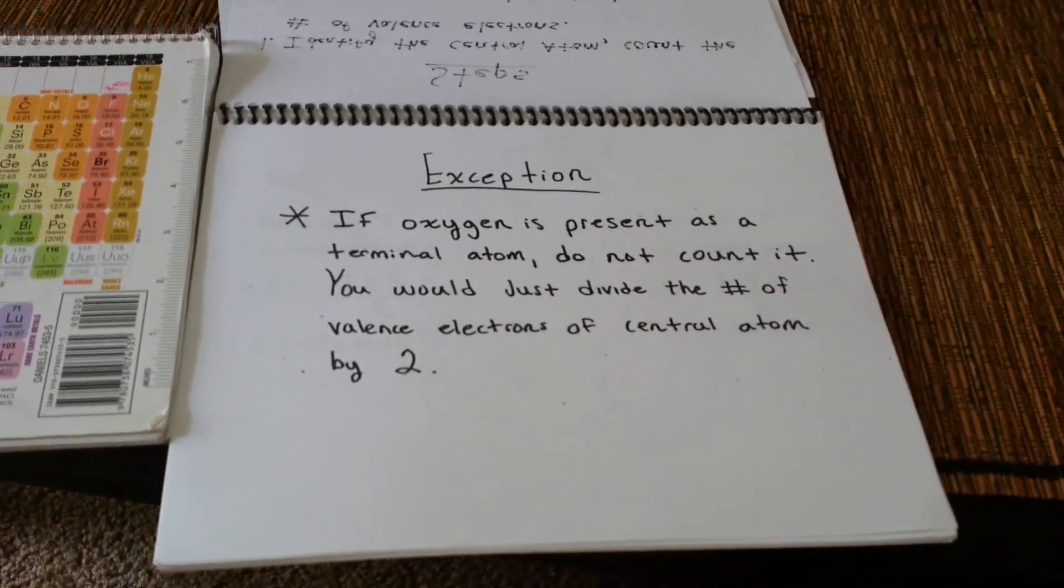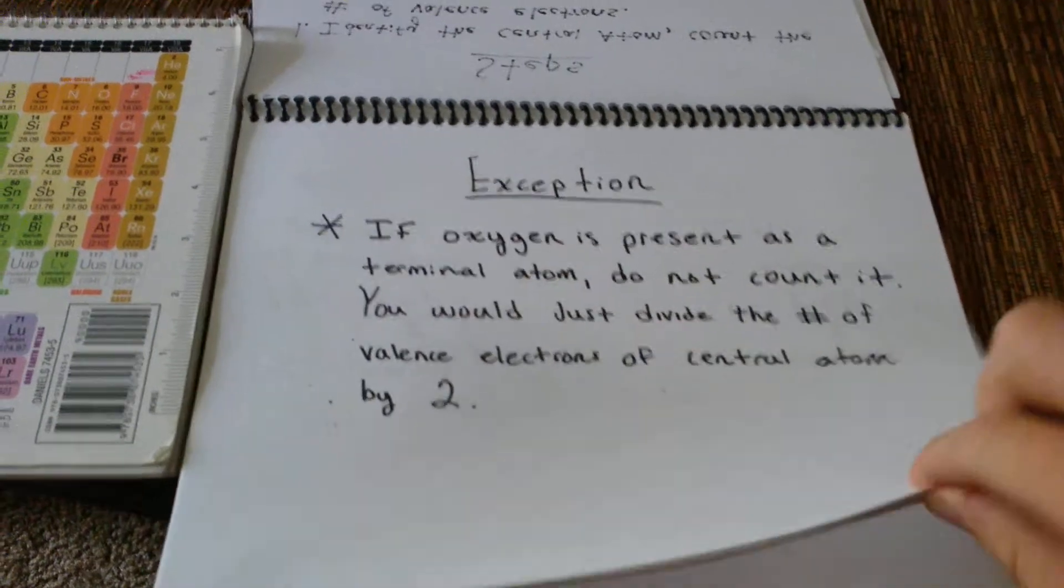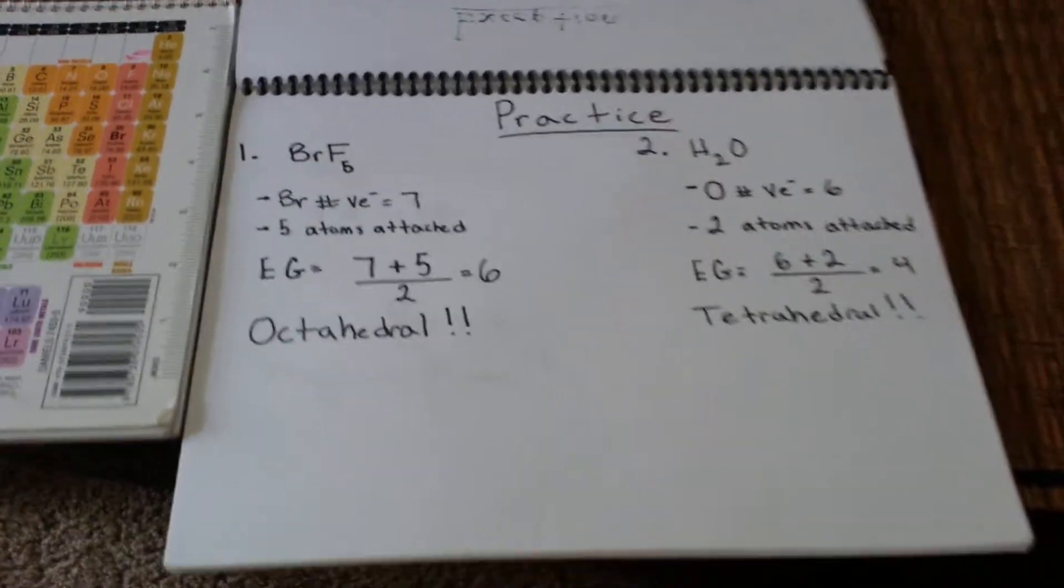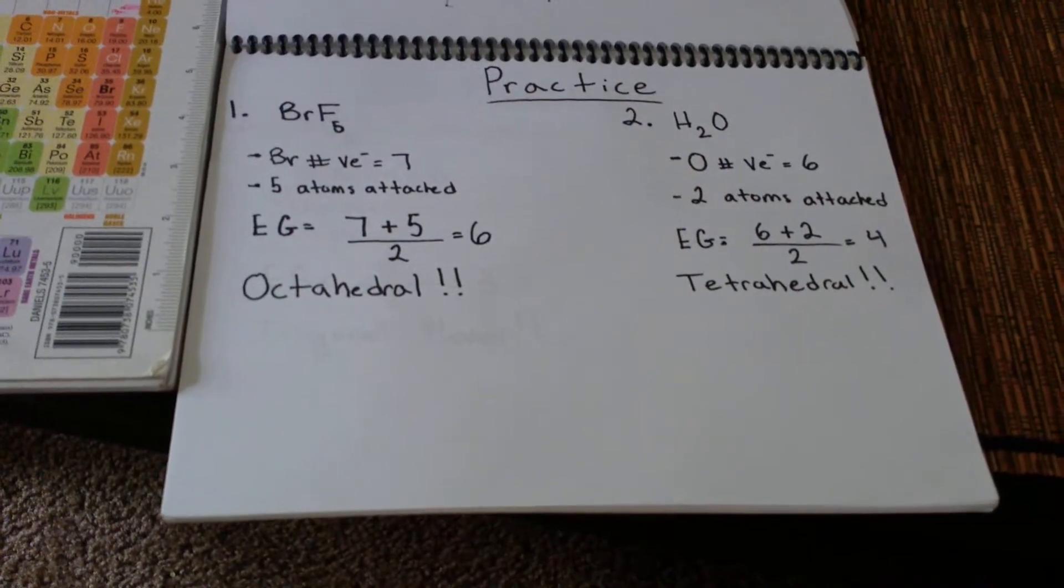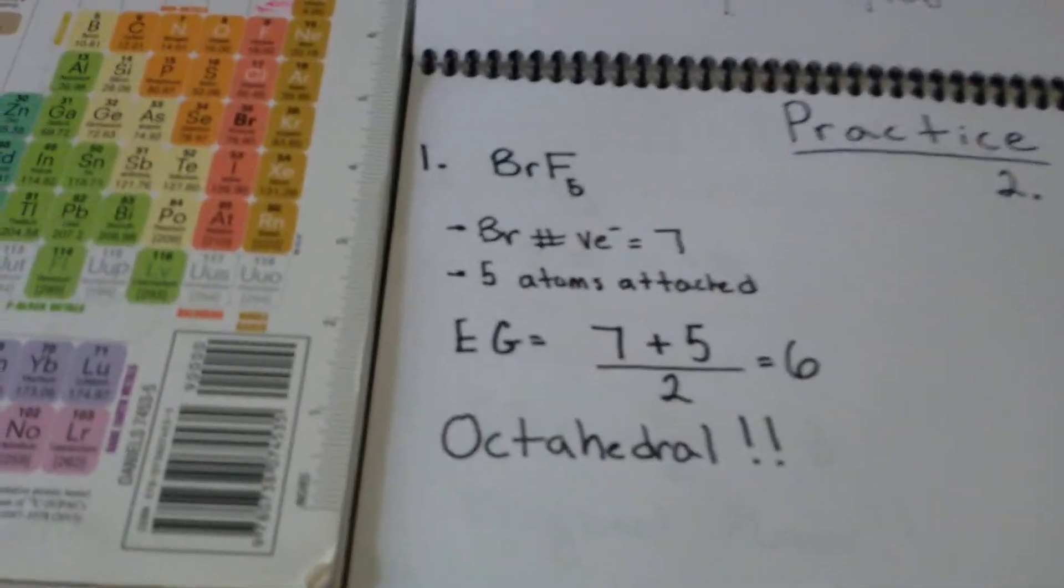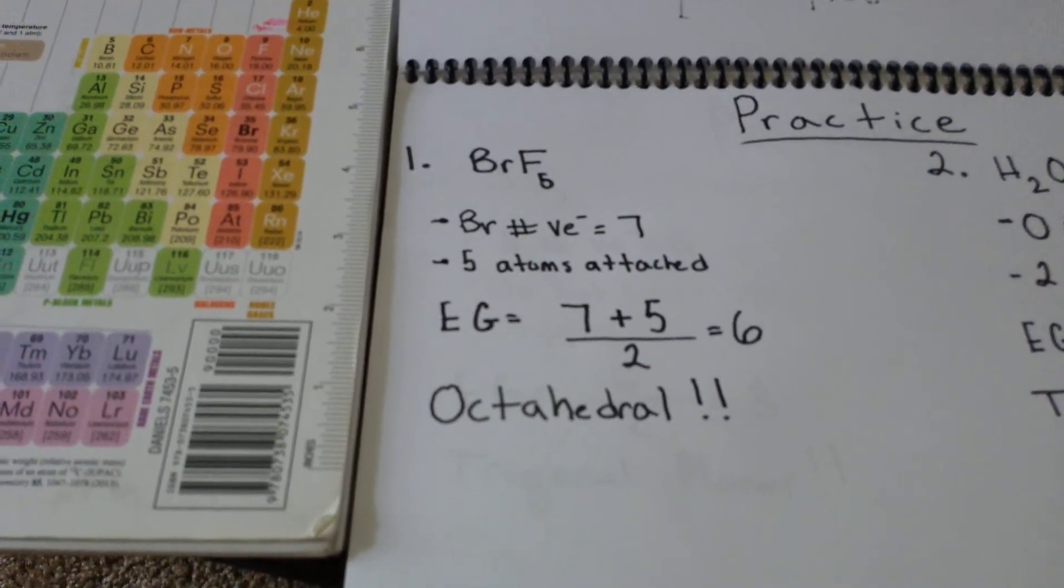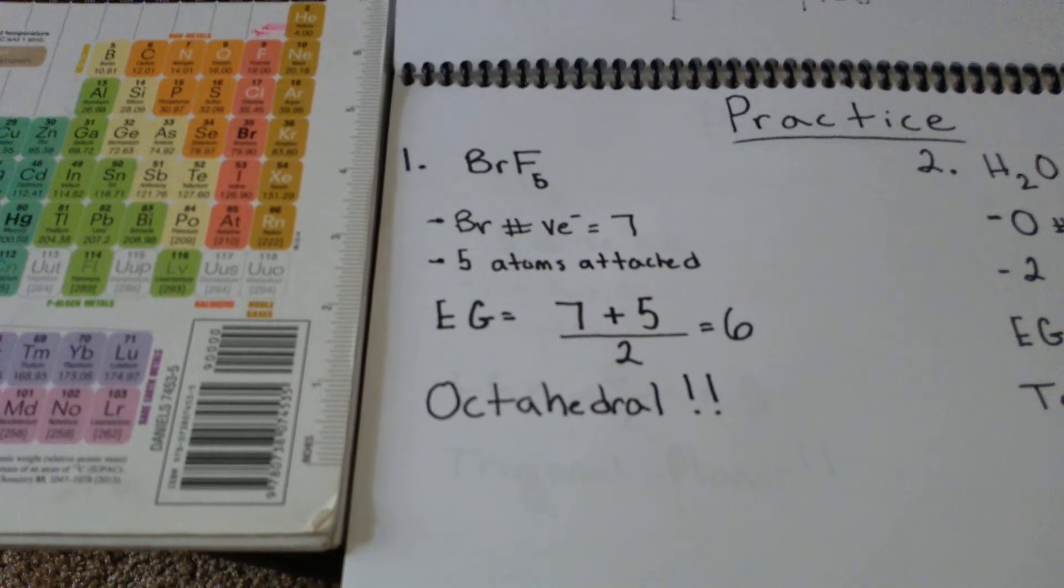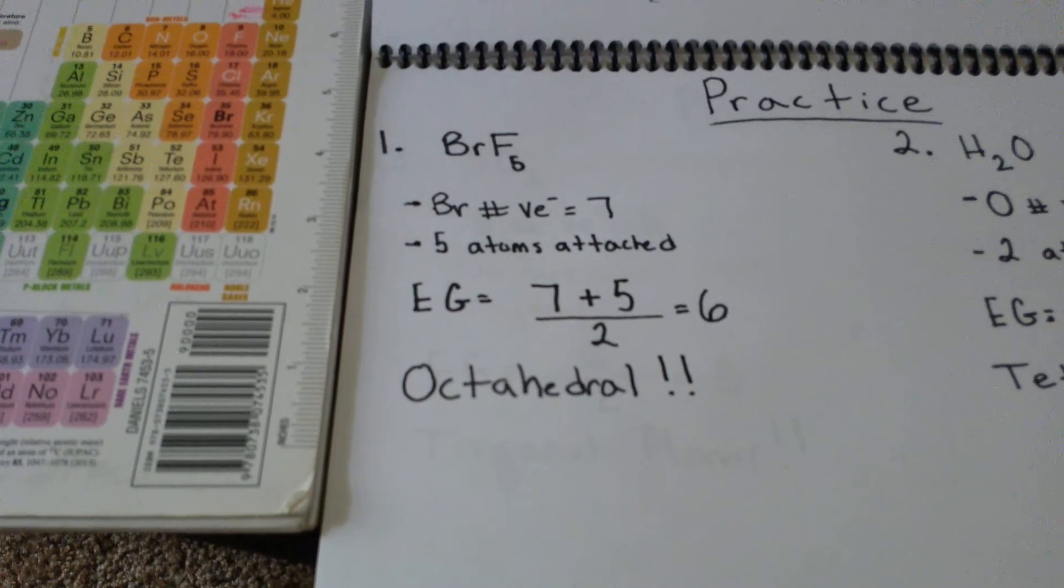Okay, let's see some examples. So BrF5. Now step one says that you're going to count the number of valence electrons of bromine, so that's seven. And then it has five atoms attached. So the electron geometry will be seven plus five divided by two, that's six. And as you guys know, that's octahedral, because six things around an atom for electron geometry is octahedral.